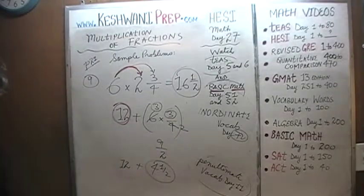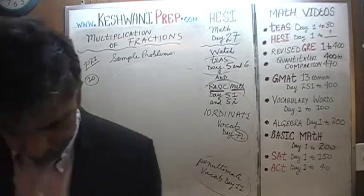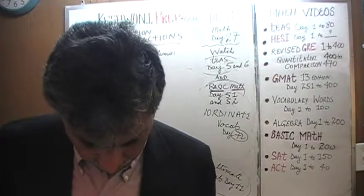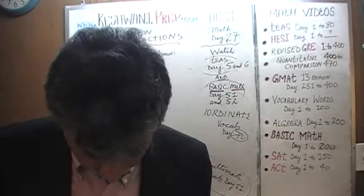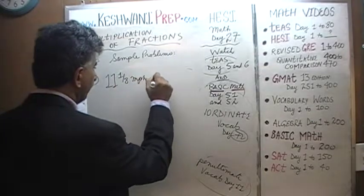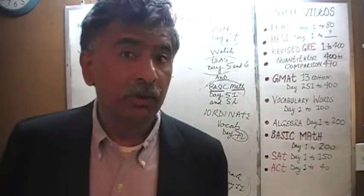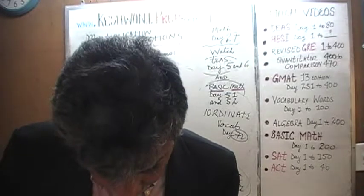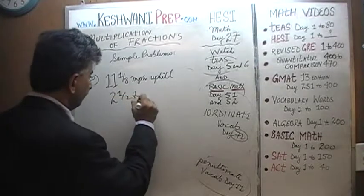Let's do number 10, the very last one. They tell us Ricky rides 11 and 1 eighth miles per hour with his bike in second gear going uphill. If Ricky rides downhill in the 4th gear, he goes 2 and a half times faster. So essentially it's going to be 2 and a half times faster downhill.